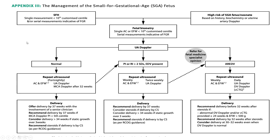Appendix 3 is also very important — in this guideline, Appendices 2 and 3 are the most critical. If the symphysio-fundal height is less than the 10th customized centile, or serial measurements indicate fetal growth restriction, or the patient is high risk for SGA based on history, biochemistry, or uterine artery Doppler — perform fetal biometry using AC and estimated fetal weight less than 10th centile. If uterine artery Doppler is normal, repeat ultrasound fortnightly assessing abdominal circumference, weight, umbilical artery Doppler, and MCA Doppler after 32 weeks. Offer delivery by 37 weeks with involvement of a senior clinician — note the word 'offer.' Consider delivery after 34 weeks if static growth for at least three weeks.